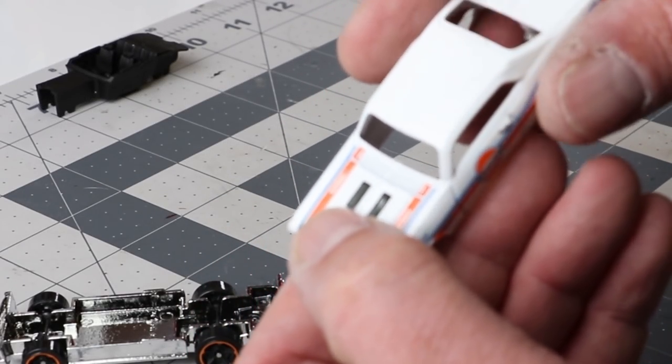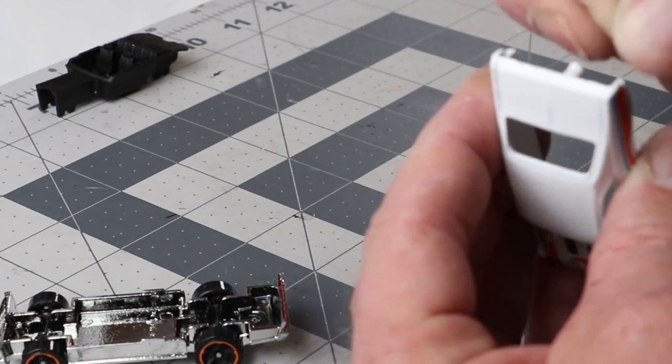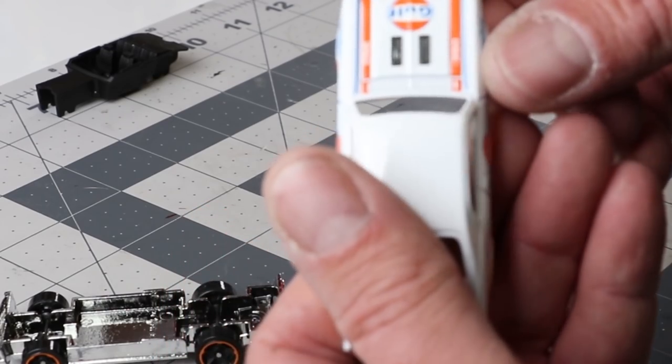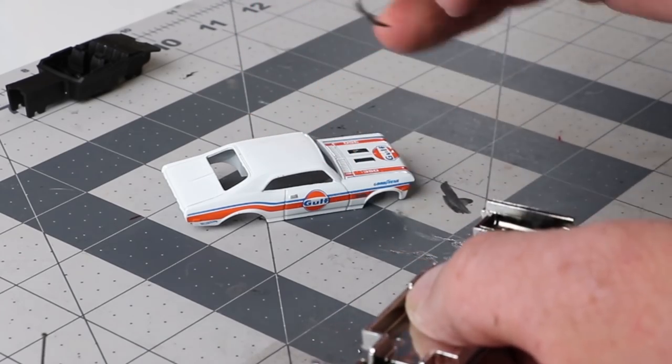The Death Proof Nova, which is what I'm replicating from the movie, had a plain hood, not an SS hood. So, I like what this Gulf has, so obviously that has to change.